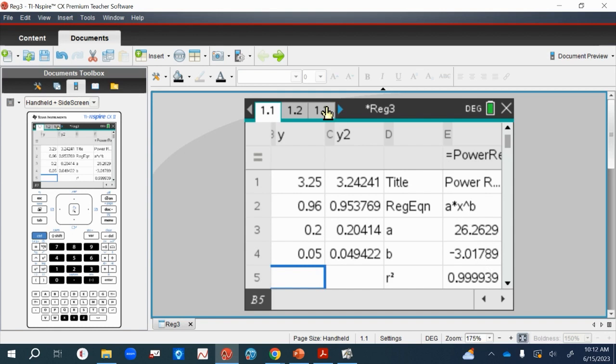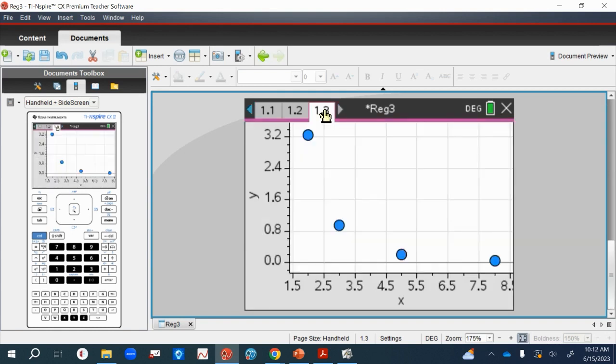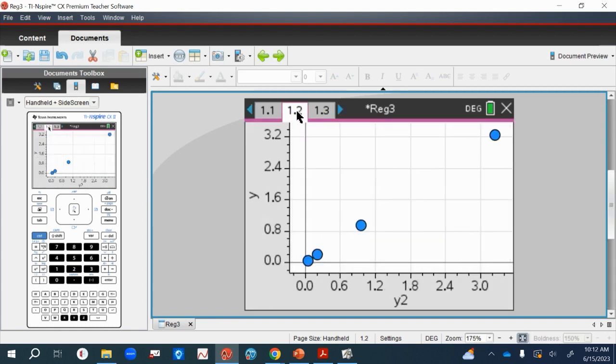Then if I instead plot y against the power equation here—so it's 26.2629 times x to the power of minus 3.01, blah blah blah—you get this. So you can see we get that lovely straight line there. That's it, really.